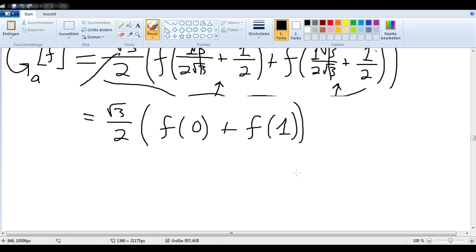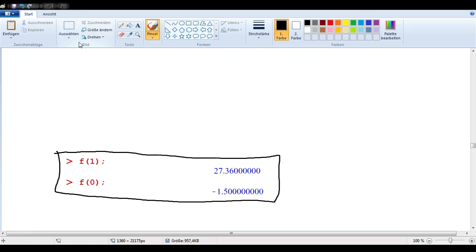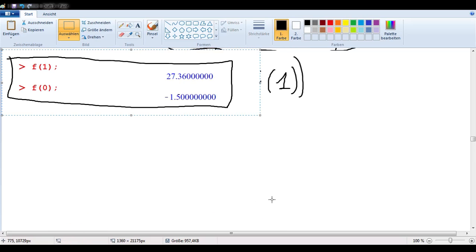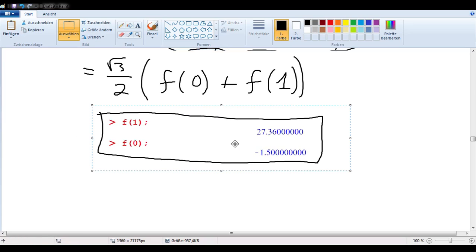So, you have given this into a computer. And you know that we have these two values. f of 1. So, you're still not showing me your actual function, but you can tell me that much. So, f of 1 is 27.36 and f of 0 is negative 1.5.